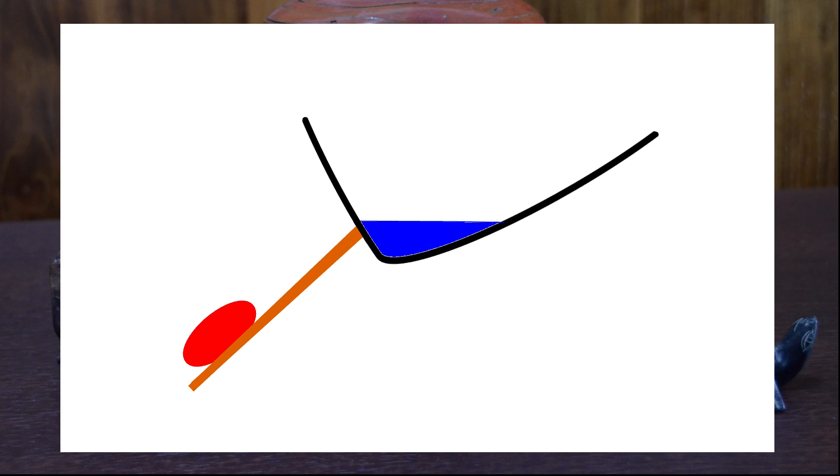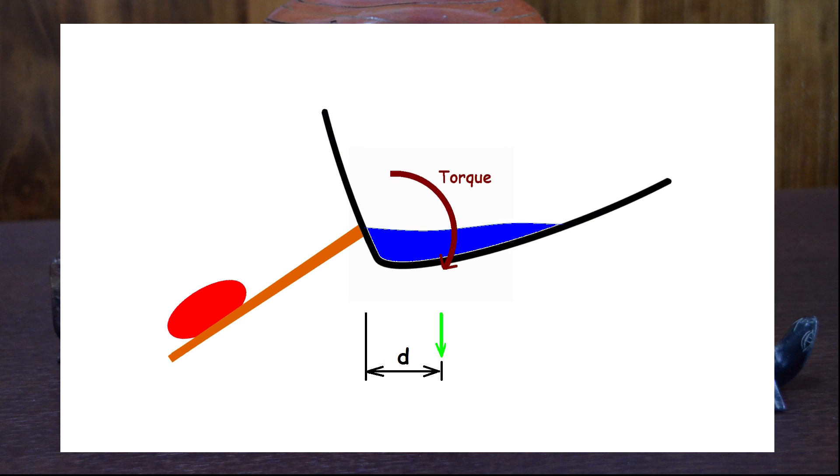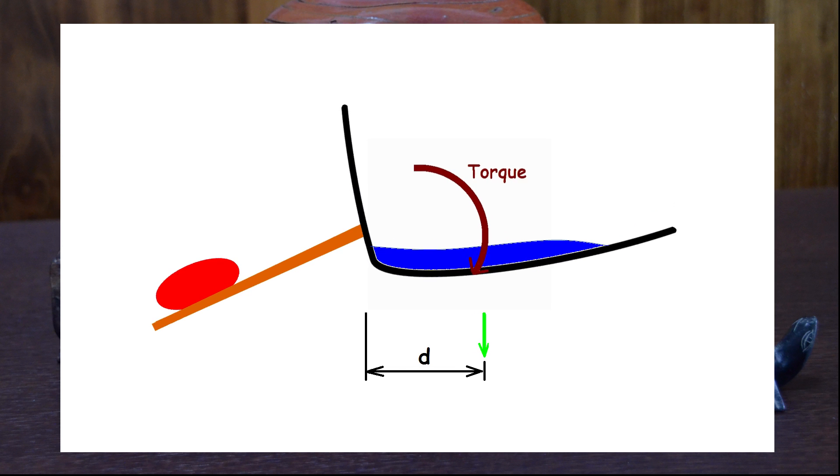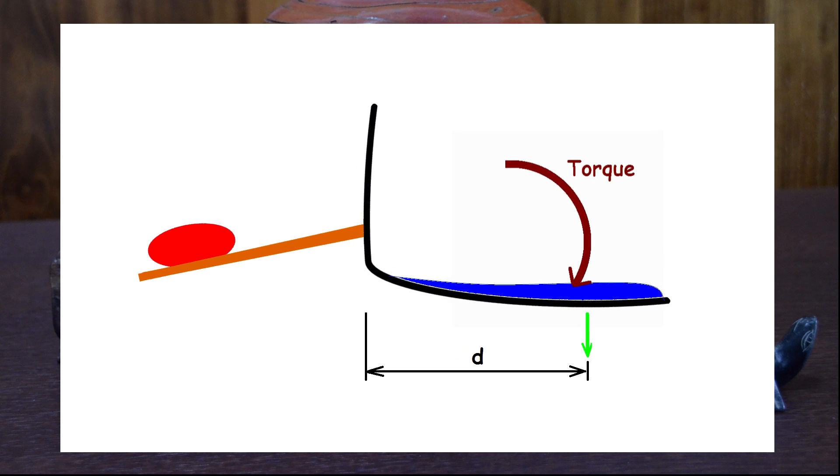This is like the water exceeding the weight limit toppling the cup. Once the toppling begins, the event is locked in because the moving water will only produce greater torque, so the toppling is unstoppable.